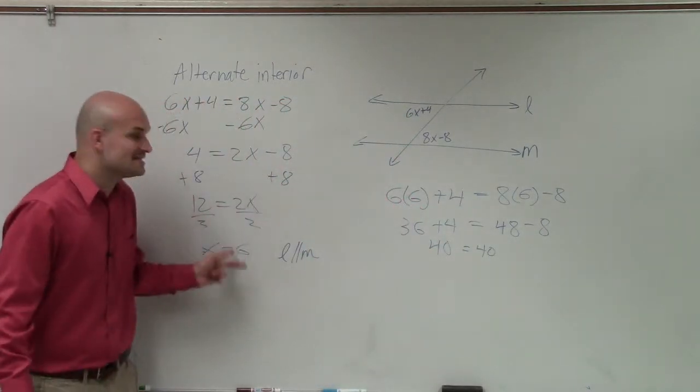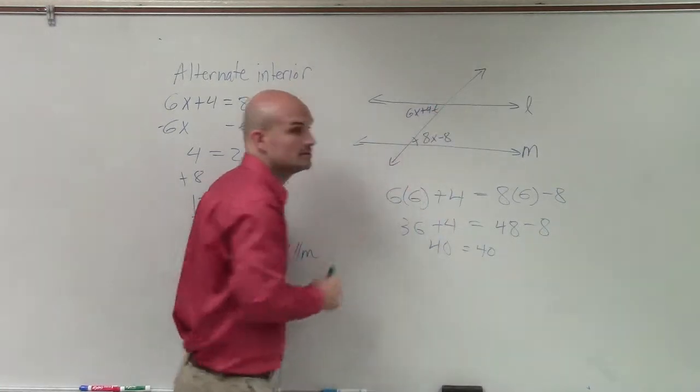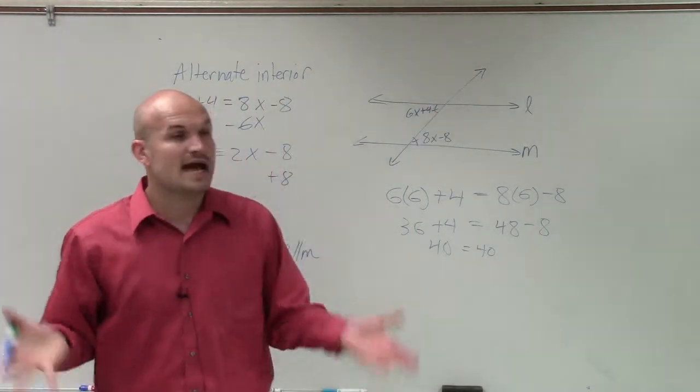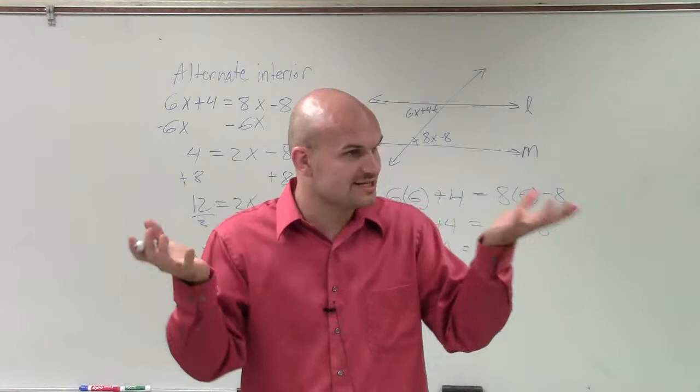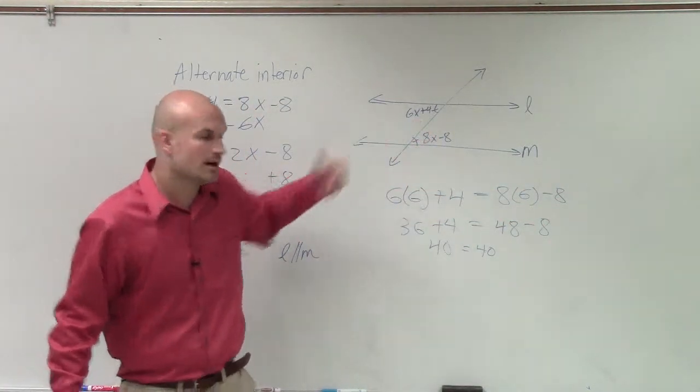So what that means is when x is equal to 6, these two angles are equal to each other. Yes? Does that make sense? And what we know is when we have alternate interior angles that are equal in measure, we have parallel lines. Right?